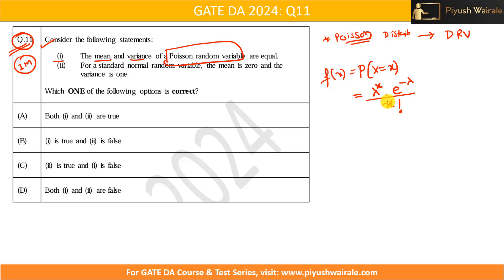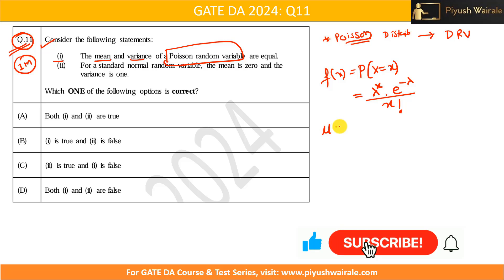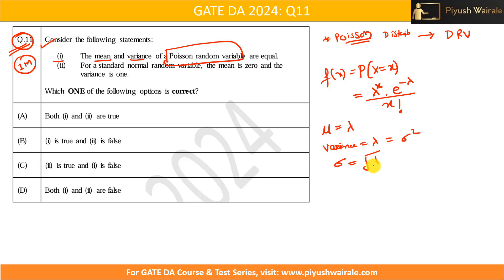For the Poisson distribution, the mean (mu) is lambda, the variance (sigma squared) is also lambda, and the standard deviation (sigma) is the square root of lambda. This is important to remember — they can ask a one-mark question like this, or give a problem and ask for the mean or variance. So the first statement — that the mean and variance of a Poisson random variable are equal — is correct.